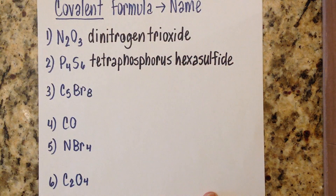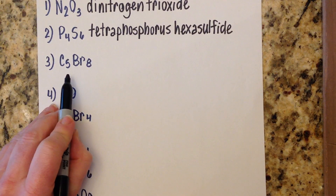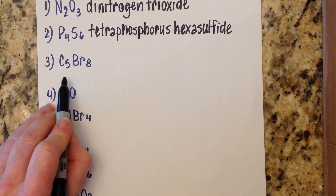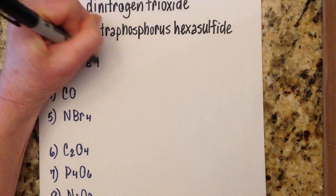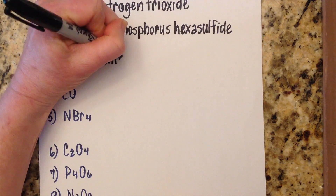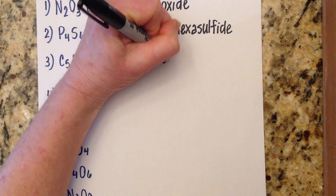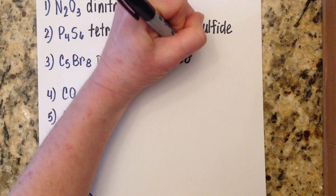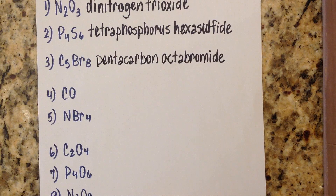I'll probably misspell something at some point since I'm talking and writing at the same time — if you see it, feel free to call me out in the comments, just be kind. Number three: five is penta, eight is octa. So C5Br8 is pentacarbon octabromide.